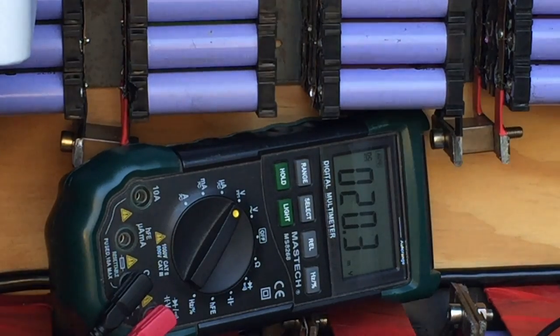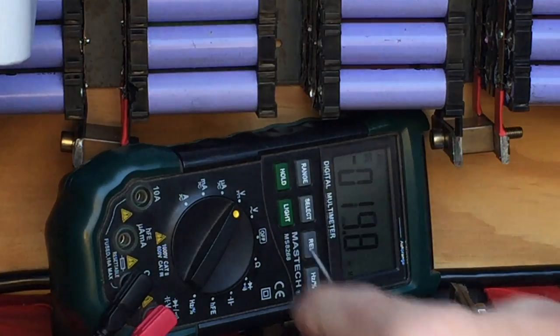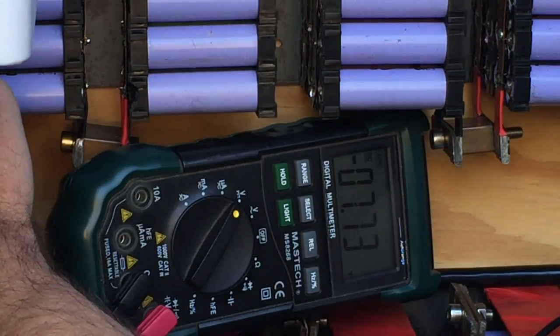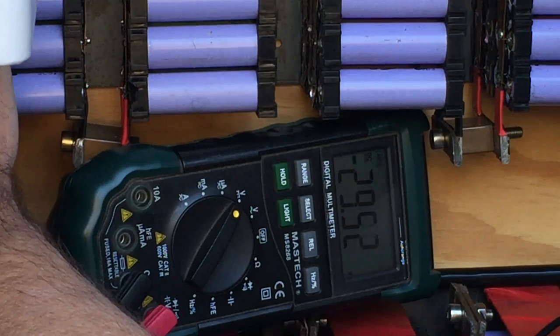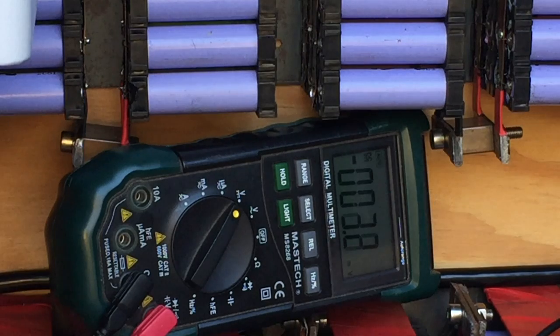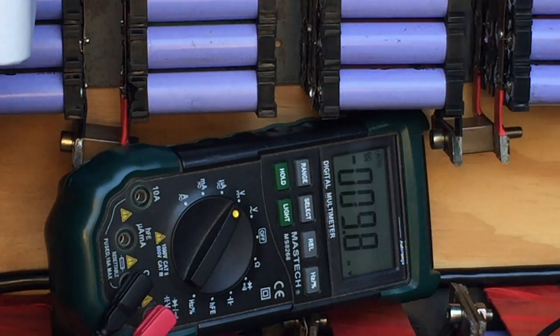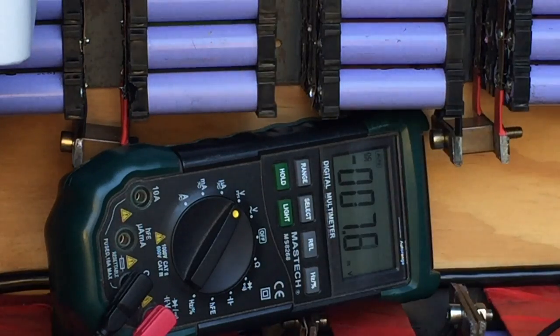So 29.53, so that says 29.53 there, and 29.32 there. So I know my multimeter is a little bit out.